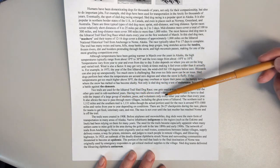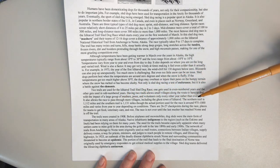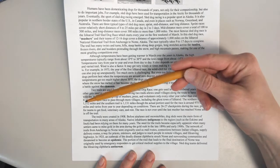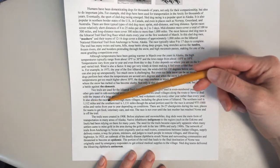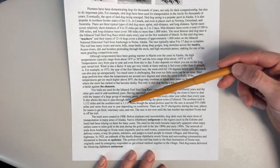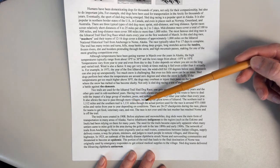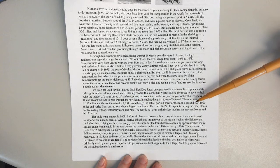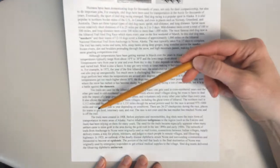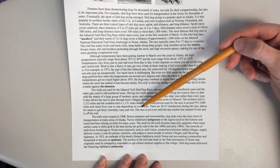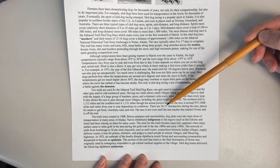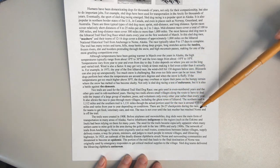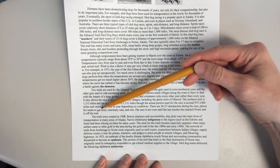It also allows the race to pass through more villages, including the ghost town of Iditarod. The northern trail is 1,112 miles and the southern trail is 1,131 miles, although the actual portion used for the race is around 975 to 1,000 miles and varies from year to year depending on conditions. There are 26 to 27 checkpoints during the race, places for teams to get food, veterinary care, and rest.